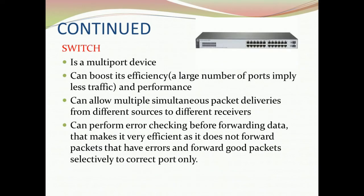The next networking device is switch. It contains many ports to connect different network segments, such as local area network and metropolitan area network. It is similar to a hub but has higher efficiency and performance. The switch can perform error checking before forwarding data, so it does not forward packets that have errors and forwards good data packets selectively to the correct port only. Switch is aware of the addresses assigned to each port and sends incoming data only to the intended port.